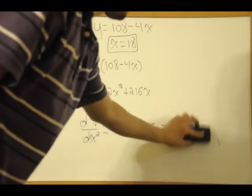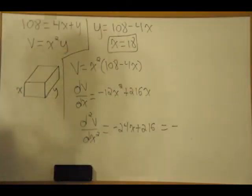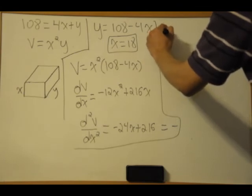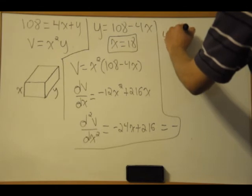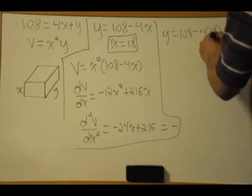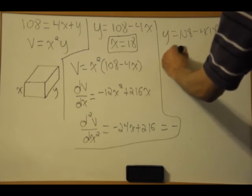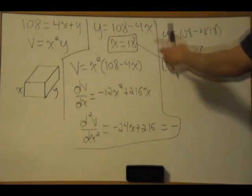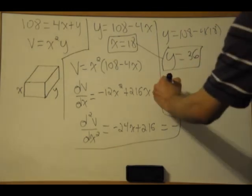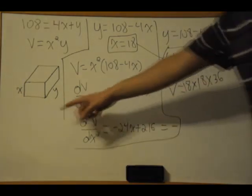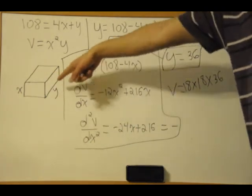Now we have to find what y is. We have x already. Y equals 36. So we have x now and we have y. If we have a box with dimensions 18 and 36, the volume equals 18 times 18 times 36. These dimensions - 18 for x, so that's 18, 18, 18, 18 inches, and 36 inches long - will produce a box with the maximum volume.